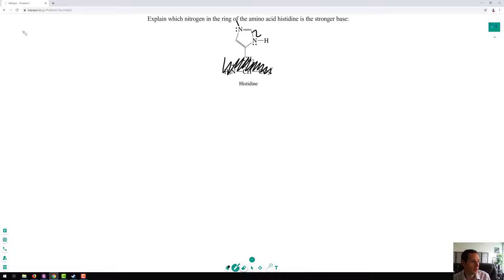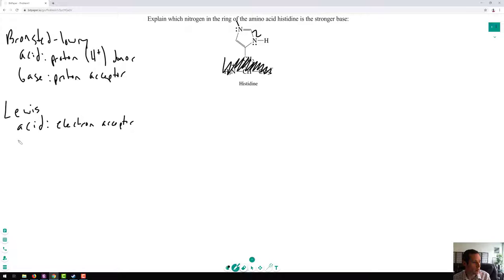Let's do a quick refresher on what an acid and base is. From our general chemistry, we have the Bronsted-Lowry definition. We also have the Lewis definition. So a Bronsted-Lowry acid is a proton donor, and a proton is just hydrogen, and the base would be a proton acceptor. The Lewis definition is a little bit different. It deals with electron pairs, so Lewis acid is an electron acceptor, and the base is an electron donor.